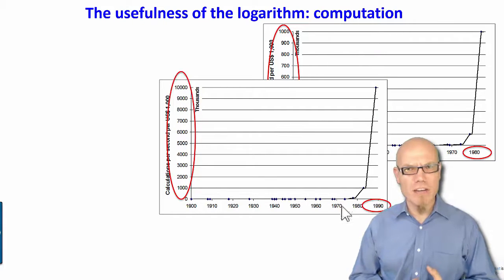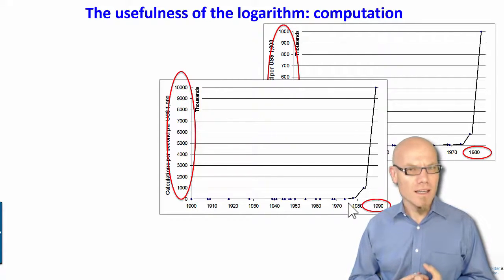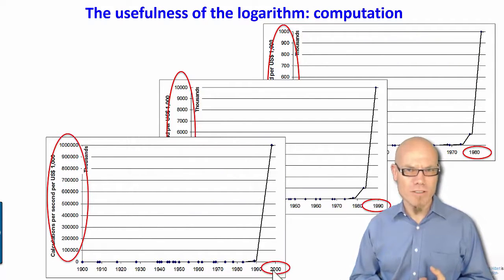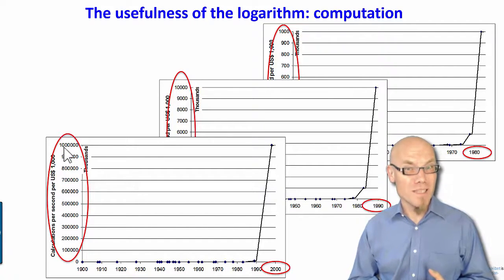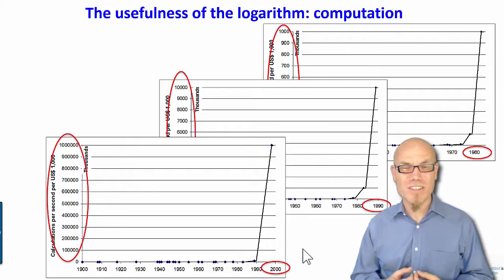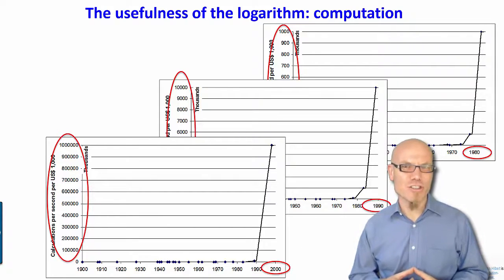Going a decade further to 1990, performance increased from 1000 to 10,000, and again most of the progress happened in the last decade. Going further to the year 2000, our maximum performance increased to 1 million, and again most of the progress happened in the last decade. It seems like all the progress just happens in the last decade — well, that's one of the signatures of exponential growth.